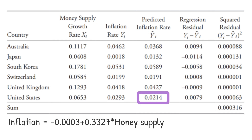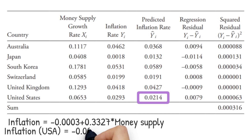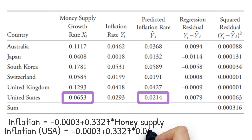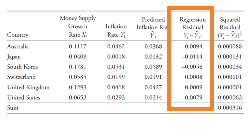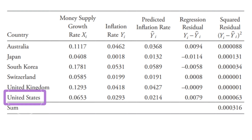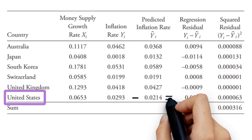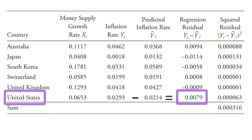For the United States, for example, the predicted value of long-term inflation is given as our estimate of alpha of negative 0.0003 plus our beta estimate of 0.3327 times the X, or money supply for the US, of 0.0653, which gives us the predicted value for inflation for the US of 0.0214 or 2.14%. The next column contains the regression residuals, which is the difference between the actual value of the dependent variable yi and the predicted value y-hat. So for the United States, the residual is equal to 0.0293 minus 0.0214, or 0.0079, or 0.79%.